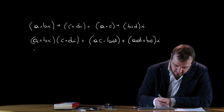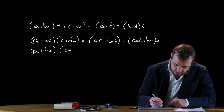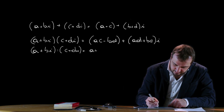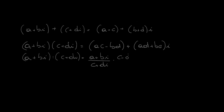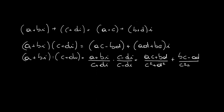Finally, the quotient (A + Bi) ÷ (C + Di), which we can also write as the fraction (A + Bi)/(C + Di): we can multiply both numerator and denominator by the complex conjugate of (C + Di), which is (C - Di). The result gives real part (AC + BD)/(C² + D²) and imaginary part (BC - AD)/(C² + D²).